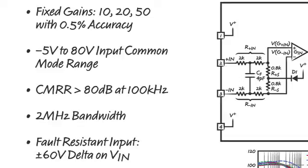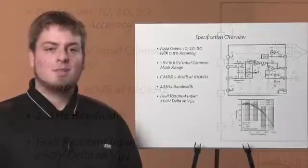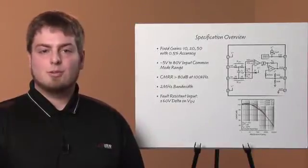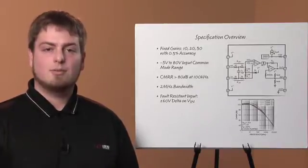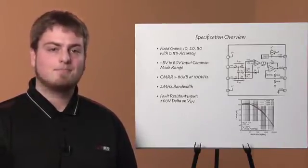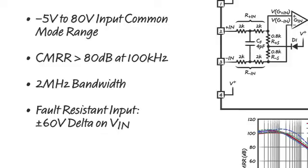The LT1999 is a versatile part that can sense bidirectional currents, and with its wide input range of -5 volts to 80 volts, can be used in both high and low side current sensing applications. The wide input range is also important for applications with inductive loads because transients that go above or below the supplies are common. The robust inputs are designed to survive up to a ±60 volt delta, allowing the part to survive open shunt faults and also enables the part to be used in fuse monitoring applications.